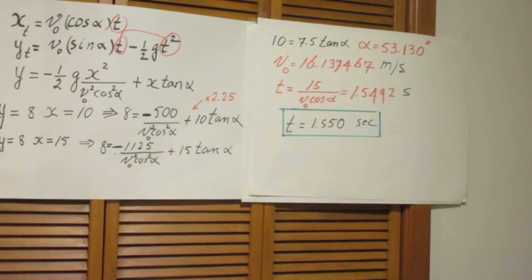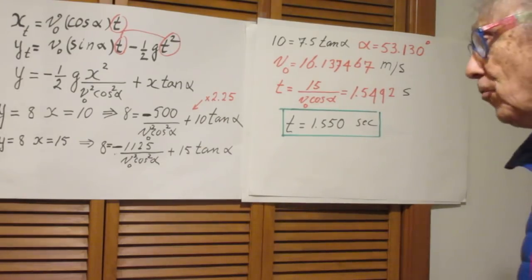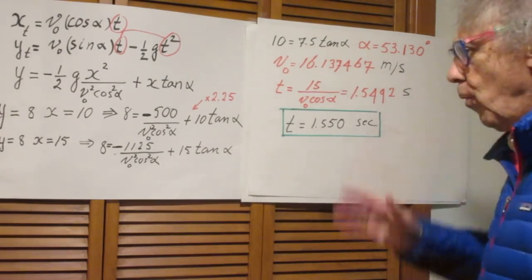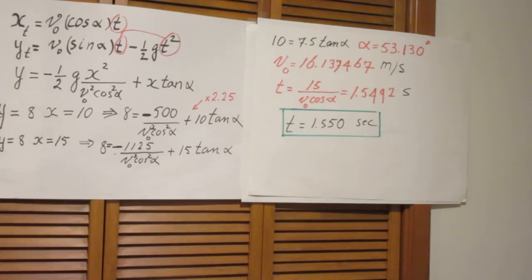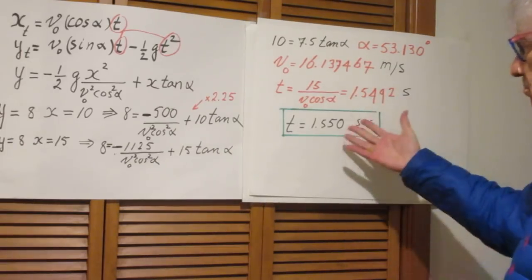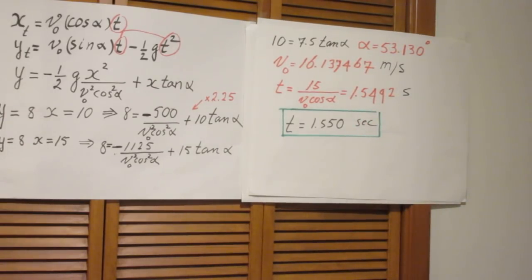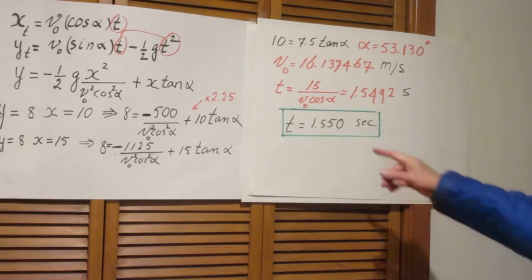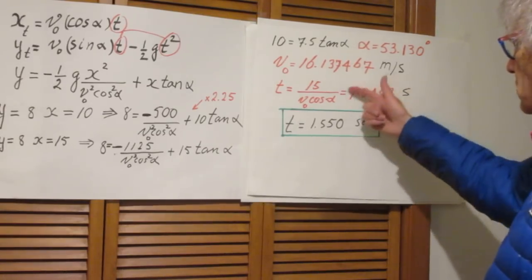But that would mean that it is actually right at that edge. So if you want to be a little bit on the conservative side, I would say should it be a trifle higher, maybe at 53.15 degrees, then you can be pretty sure that it will clear the edge of the roof. Assuming, assuming of course that the object is extremely small. And so the answer that I prefer is 1.550 seconds. But this of course is fine.